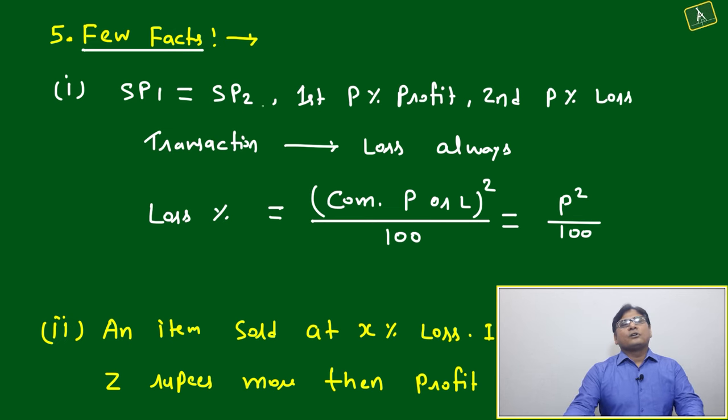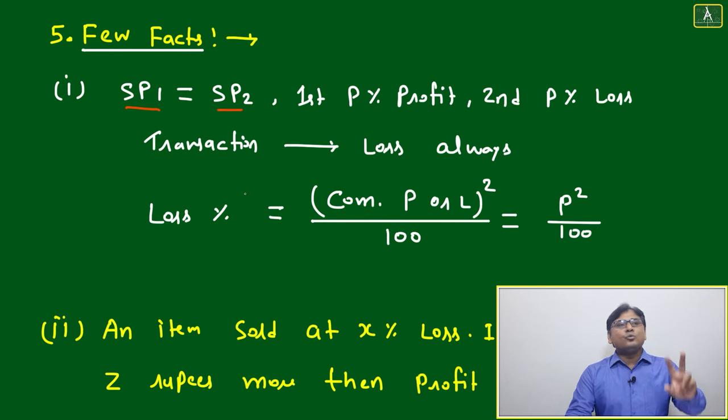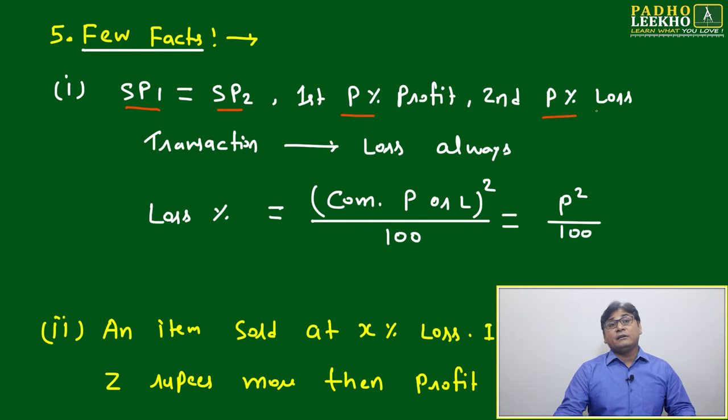Two facts related to profit and loss. Fact number one: if selling prices are equal, two items are there you are selling at the same price, but the first item you are selling at p percent profit and the second item you are selling at p percent loss, what will happen overall?